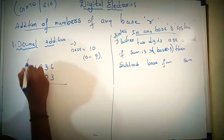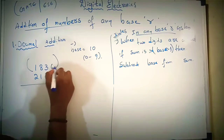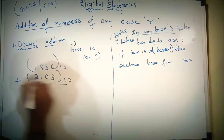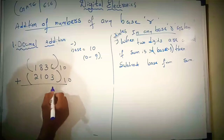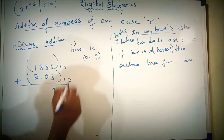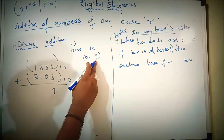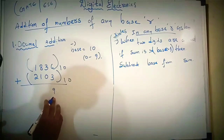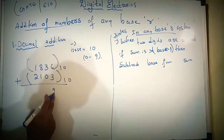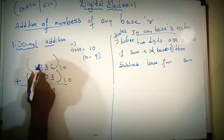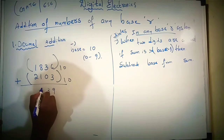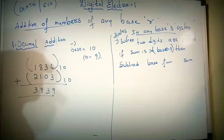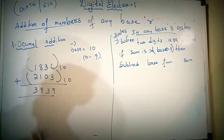Second example: take two numbers 1 8 3 6 and 2 1 0 3. In base 10, 6 plus 3 is 9. The maximum digit is 9, which means base minus 1, so simply keep it as 9. 3 plus 0 is 3, 8 plus 1 is 9, 2 plus 1 is 3. The total result does not exceed 9.